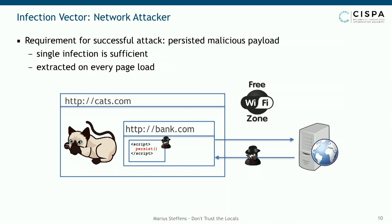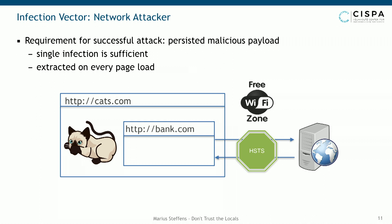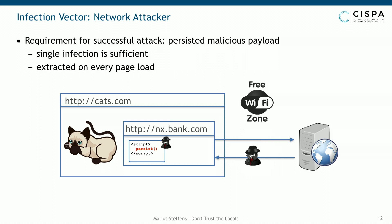An important security mechanism that might interfere is HSTS — a response header which instructs the browser to only ever visit bank.com using HTTPS. However, a normal HSTS deployment only applies to the specific domain, not subdomains. There is an additional flag, 'includeSubDomains', which extends this. If the includeSubDomains flag is missing, an attacker can point to a non-existing subdomain and intercept the request since HSTS is not in place. Since cookies can be set from subdomains to parent domains, an attacker could set a cookie for bank.com from a non-existing subdomain.